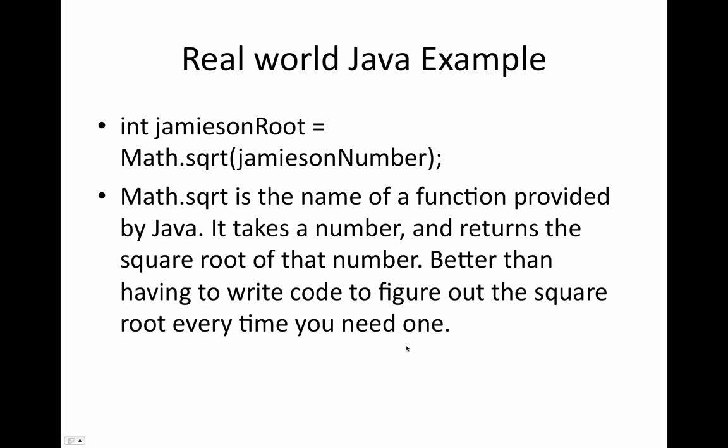So here's a real world example in Java of calling a function. Int jameson root equals math dot sqrt, which stands for square root, parentheses jameson number parentheses semicolon. So math dot sqrt is the name of the function provided by Java. Basically, Java has written a whole bunch of functions for you that make your life easier. Calculating a square root on a computer is not often a function that is built in. Sometimes it is, but often it isn't.